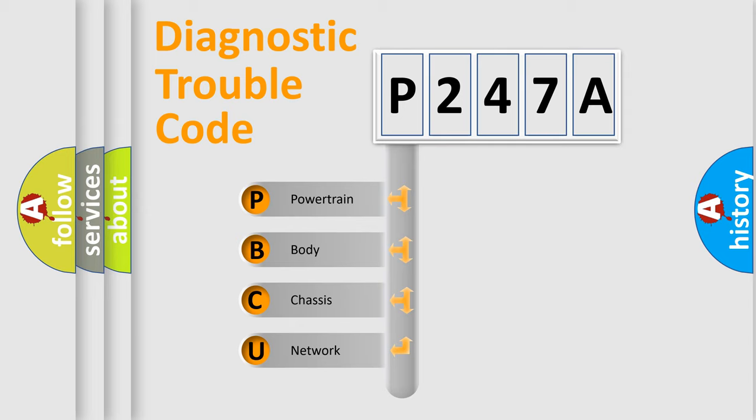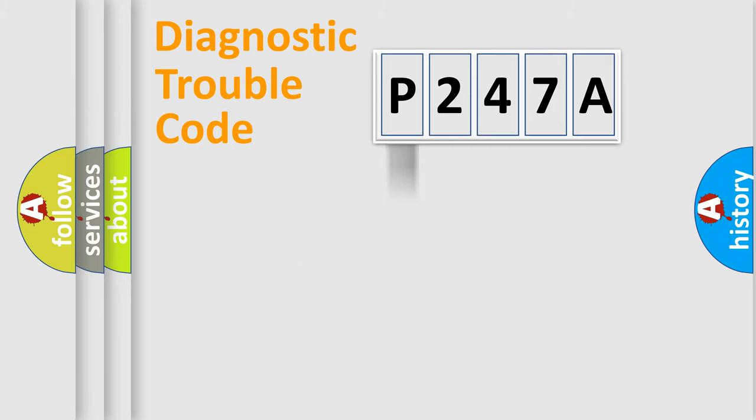We divide the electric system of automobile into four basic units: Powertrain, Body, Chassis, and Network. This distribution is defined in the first character code.